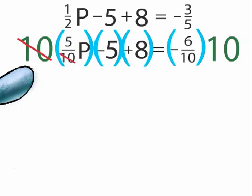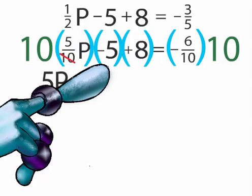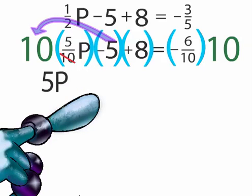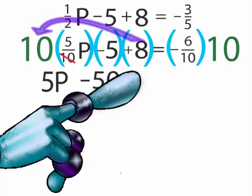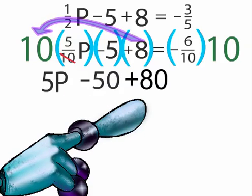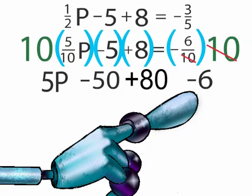The two 10's cancel out and we are left with 5P for the first term. In the second term, we have negative 5. Negative 5 times 10 equals negative 50. In the third term, we have 8. 10 times 8 equals 80. In our last term, the two 10's cancel out. We are then left with a negative 6.